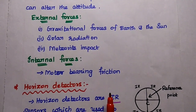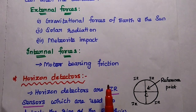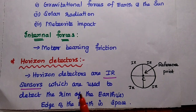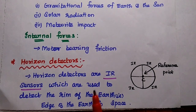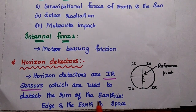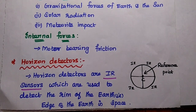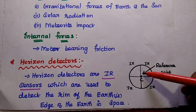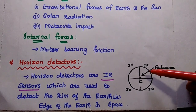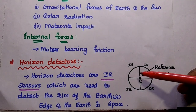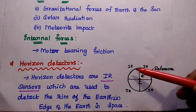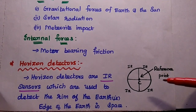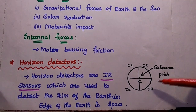The change in attitude can be easily identified by using horizon detectors. Horizon detectors are infrared (IR) sensors used to detect the rim of the earth — that is, the edge of the earth in space. We consider the center of the earth as a reference point and divide the earth into 4 quadrants, with one infrared sensor for each quadrant to detect attitude changes.